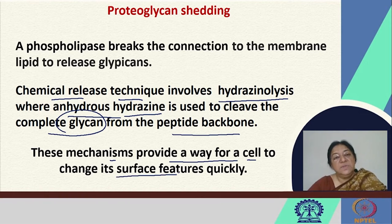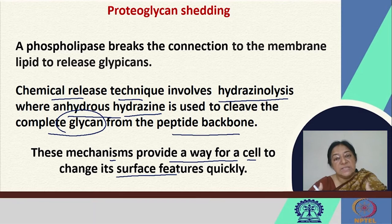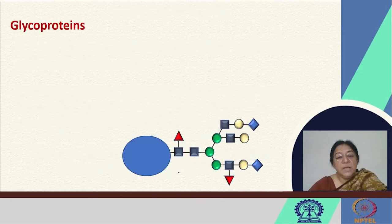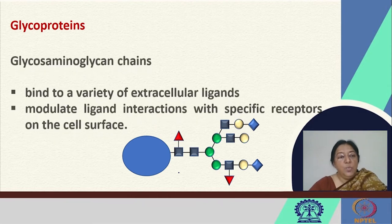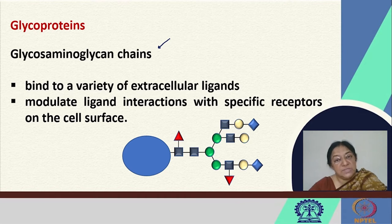When integral cell membrane proteins with carbohydrate connections are cleaved off, the membrane surface adapts to a different type of surface feature, which may be involved in surface recognition for cell-cell adhesion and other activities. Glycoproteins in general have specific glycosaminoglycan chains that bind to a variety of extracellular ligands and can modulate ligand interactions with specific receptors on the cell surface, which is important for their functionalities.